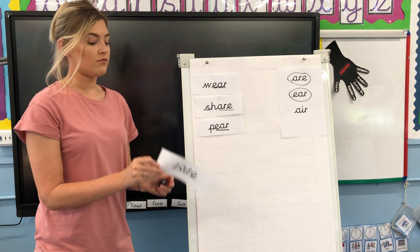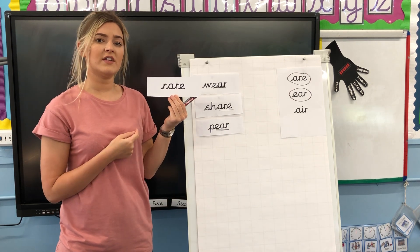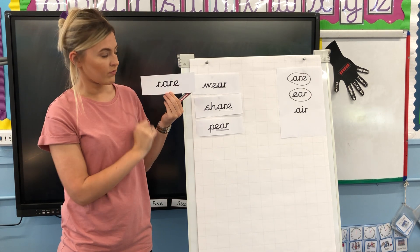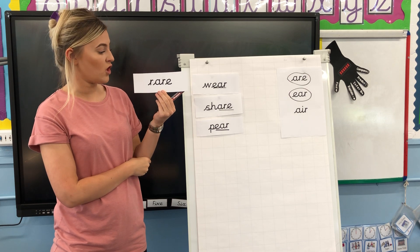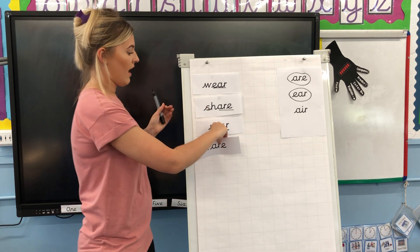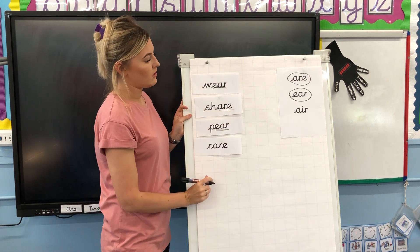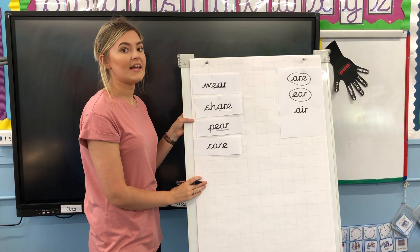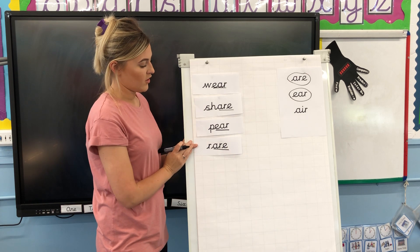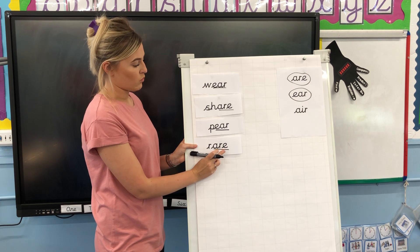Last word that we're going to have a go at reading. I would like you to have a go at this one all on your own. Excellent, if you have just read R-Air: Rare. Have a look at the word Rare — which Air has been used? The A-R-E or the E-A-R? Excellent, if you have said the A-R-E. And again, it is at the end of the word.